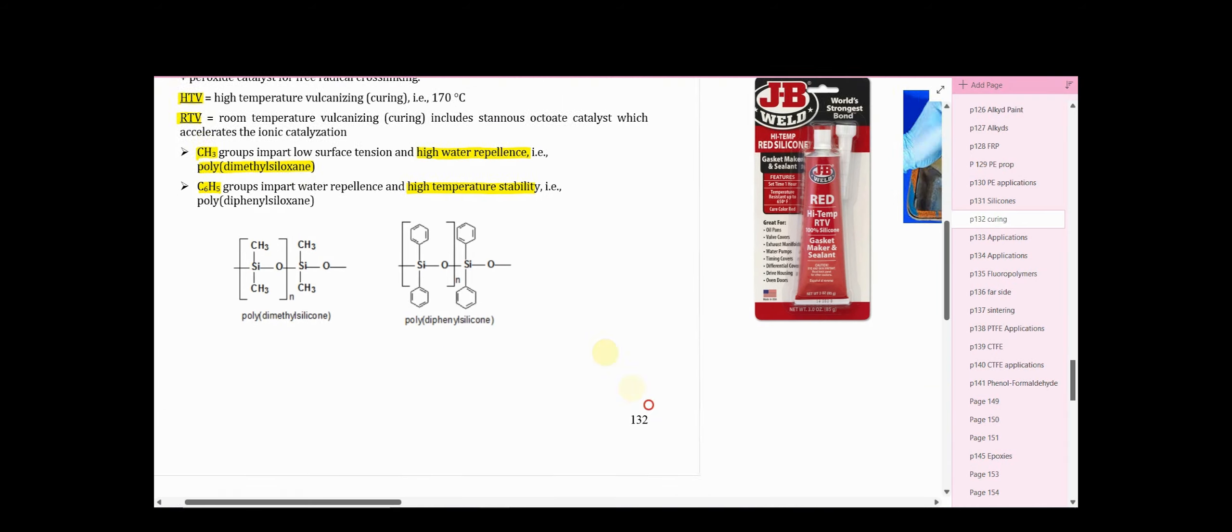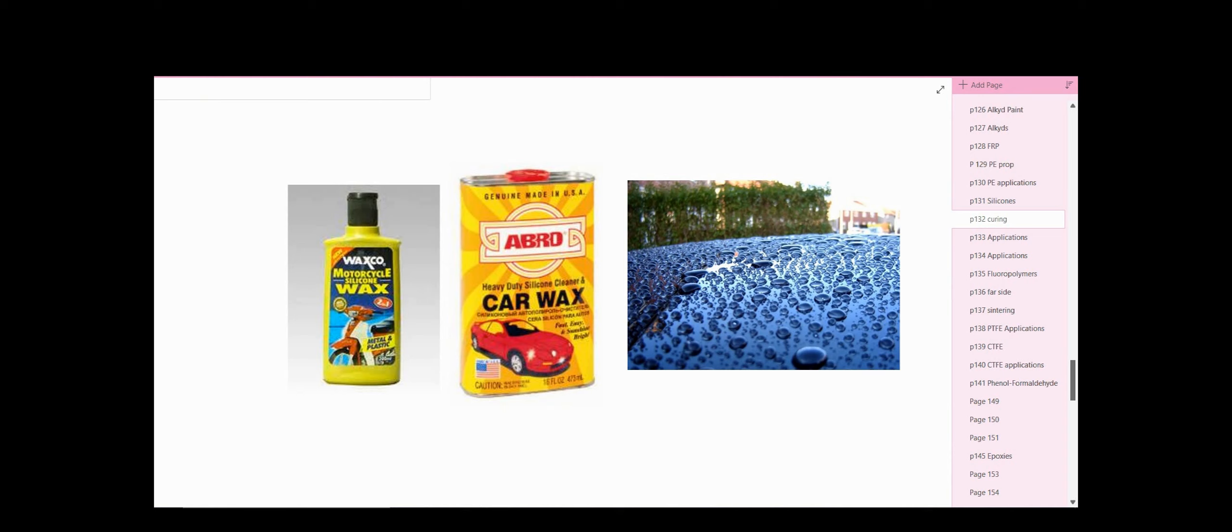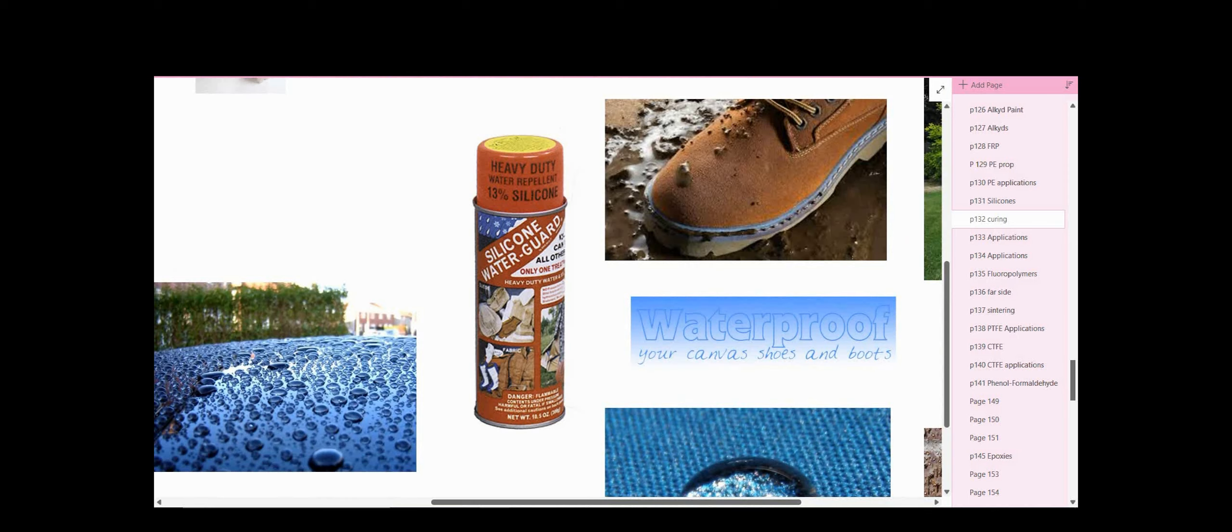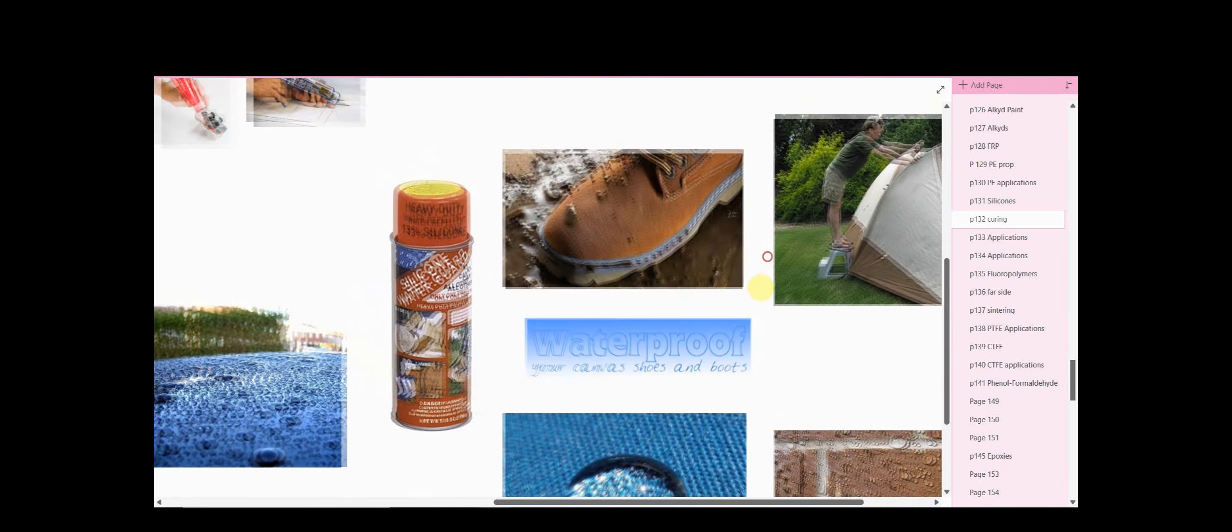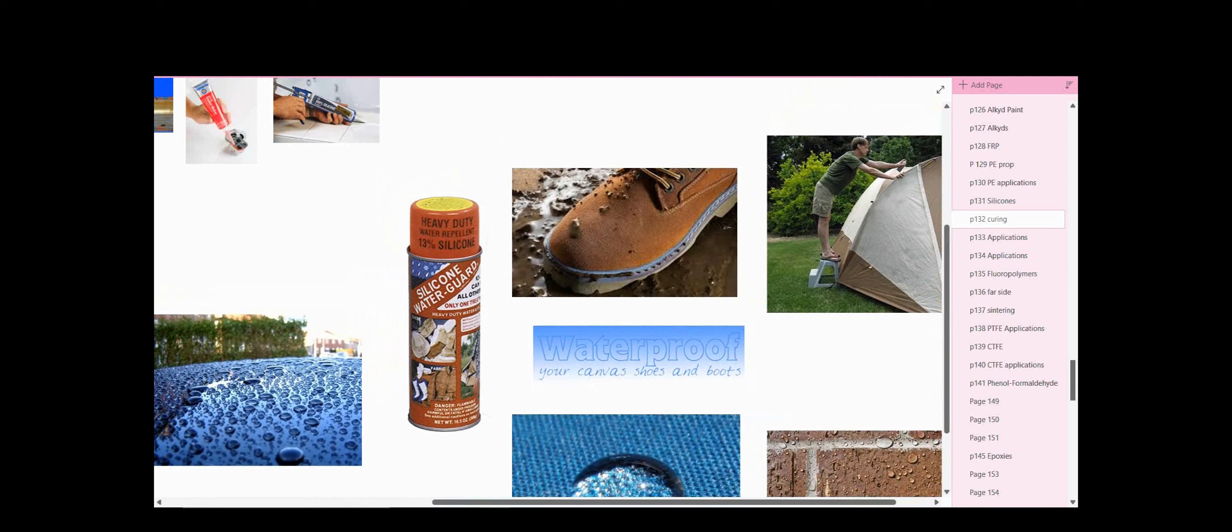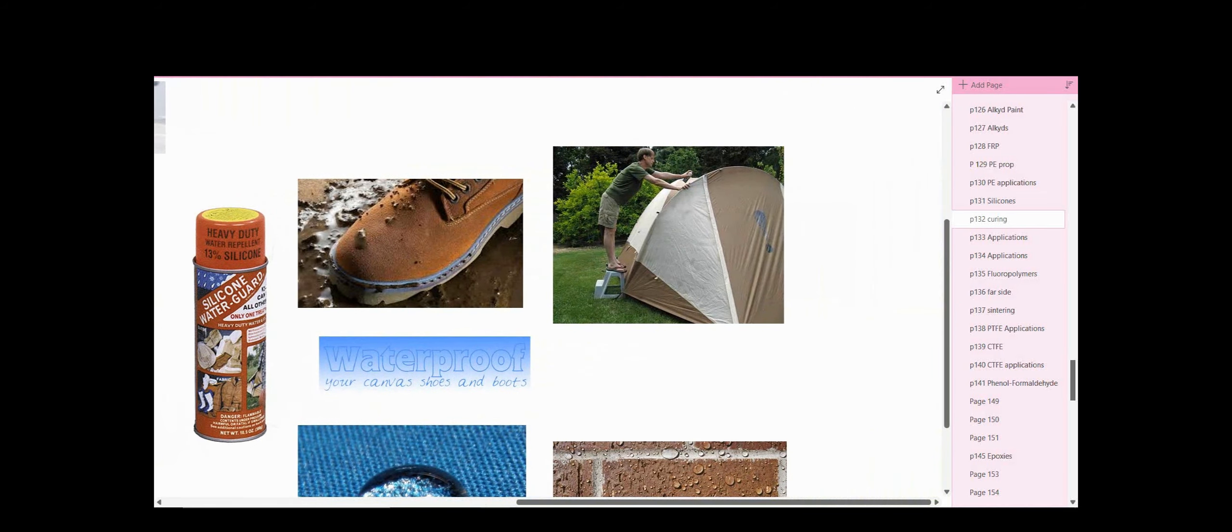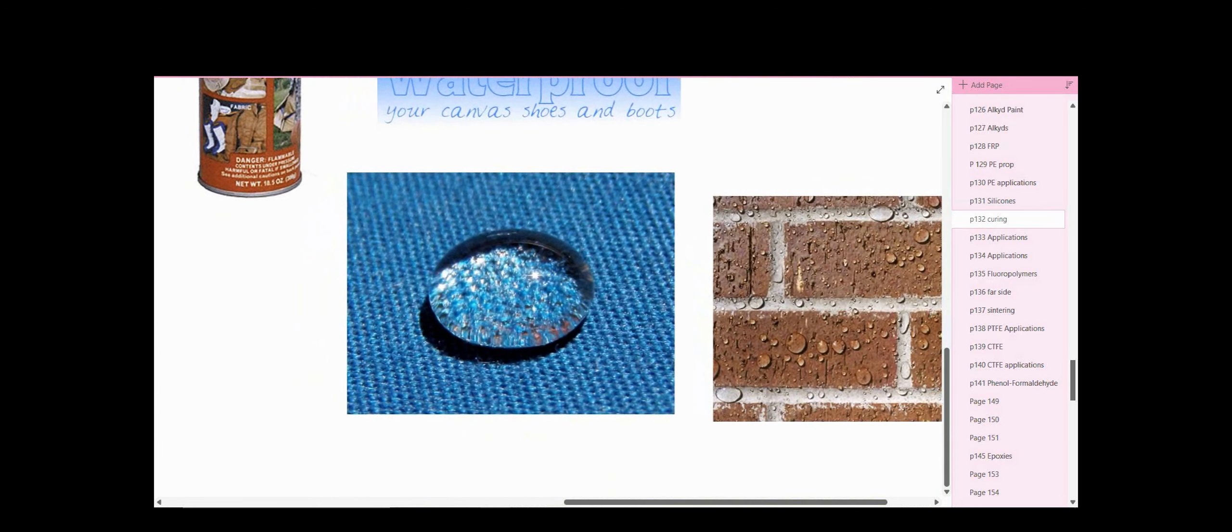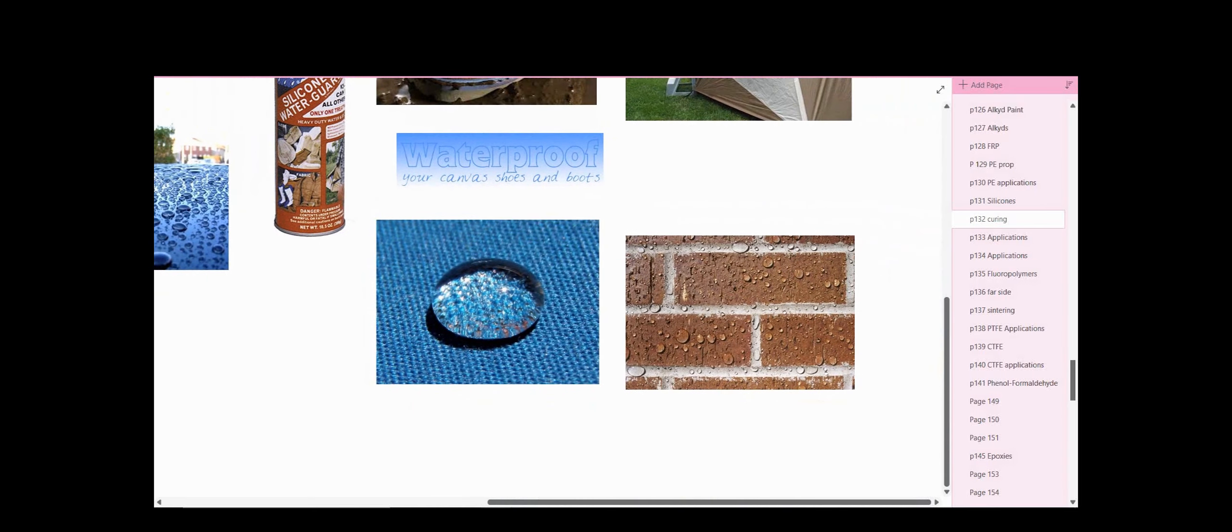Let's take a look at some applications here. Here are some silicone based car waxes. Notice the high water repellency imparted to the wax by the silicone. Here's silicone water guard - waterproof your canvas shoes and boots, waterproof your tent. Here's a textile with a silicone waterproofing on it, even waterproofing the surface of brick.